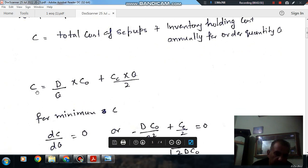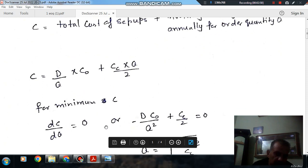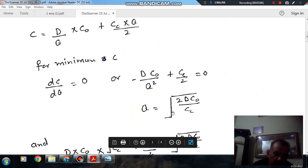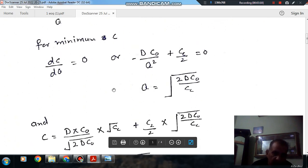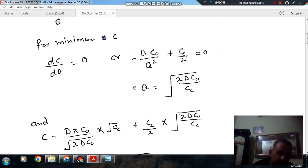So now for minimum value of C, we will find Q and differentiate C with respect to Q. So dC/dQ is equal to 0, or -DC0/Q² + CC/2 = 0. Therefore Q equals the square root of 2DC0/CC. That is the economic order quantity or we can directly find it as the EOQ formula.